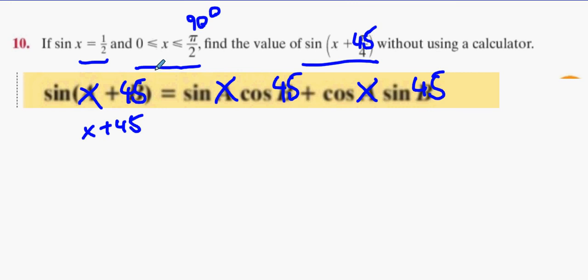What do we do next? What's sin x? A half. What's cos 45? 1 over root 2. Cos x? That's the problem - you don't know what cos x is. Or do you? Look at this - sine is the opposite over hypotenuse.